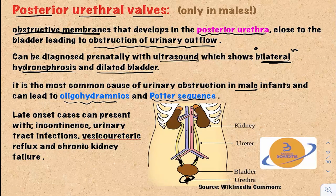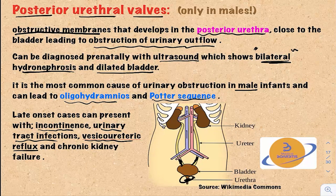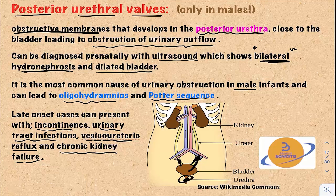If this disease develops later, it can result in urinary incontinence, urinary tract infections, and vesico-ureteric reflux — which means reflux of urine from the bladder into the ureter — and also chronic kidney failure. Always keep in mind that posterior urethral valves only happen in male infants; it does not happen in female infants.